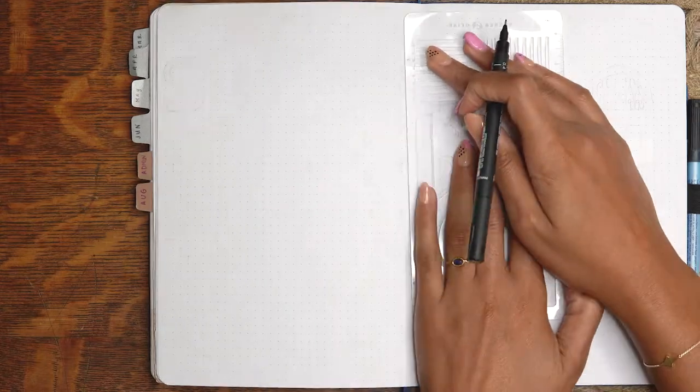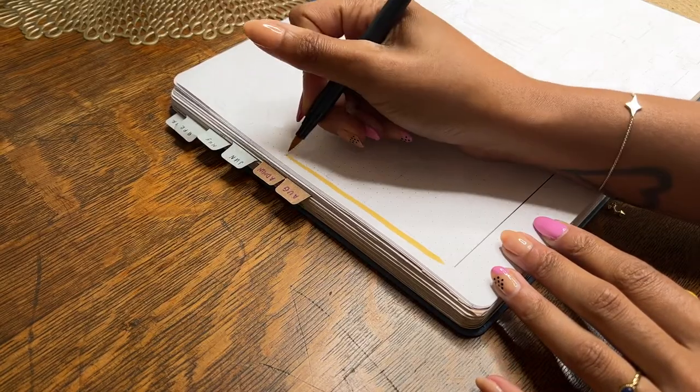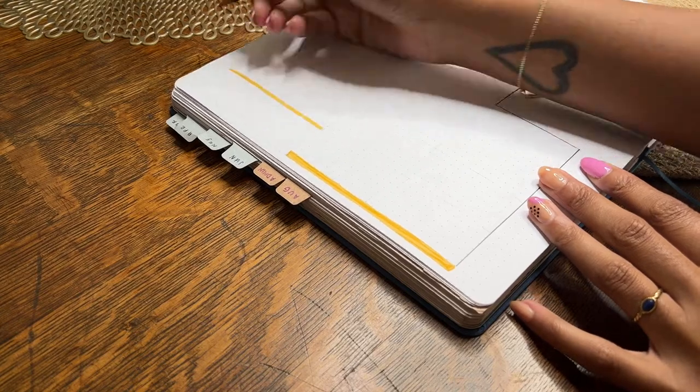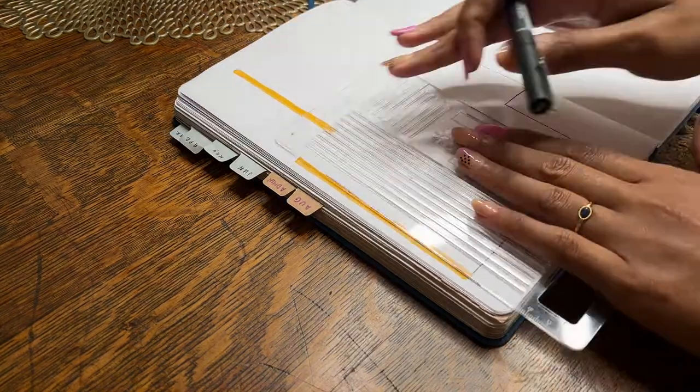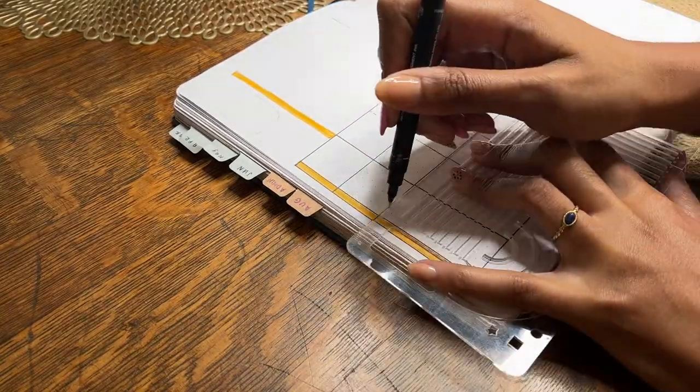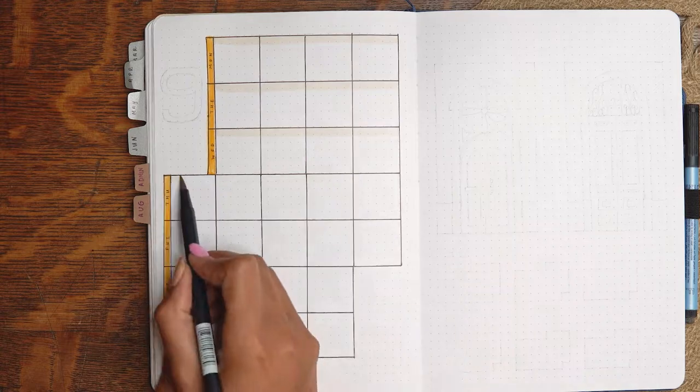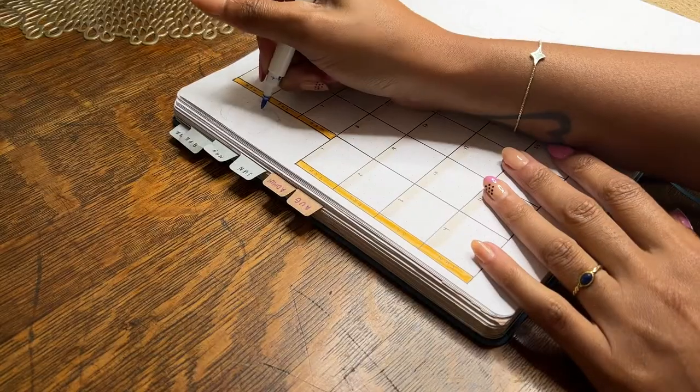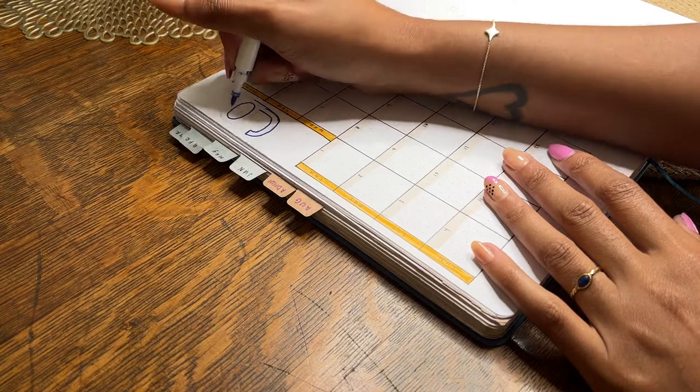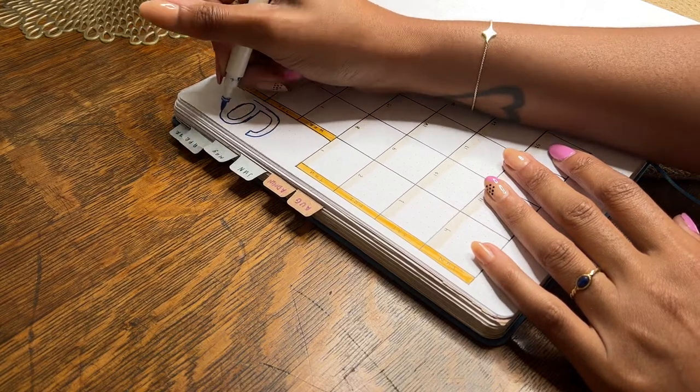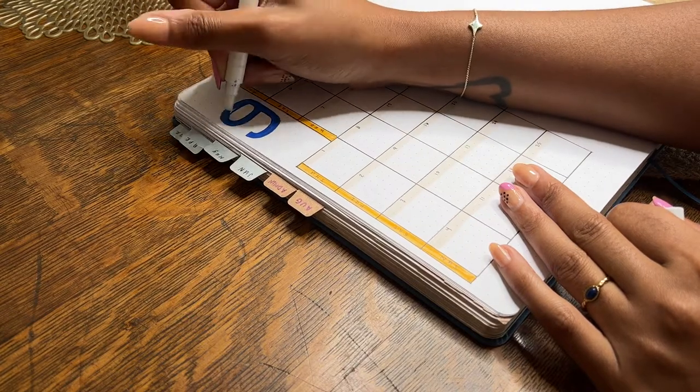On to the monthly spread. I am back to my Monday start vertical calendar. Sorry Sunday start people. I've been loving this vertical calendar situation. And I don't know, it just feels fresh. And I just like that I still have plenty of space to write in events but it doesn't take up the entire spread. So right now and probably for the near future at least, I think I'm on this vertical calendar train.